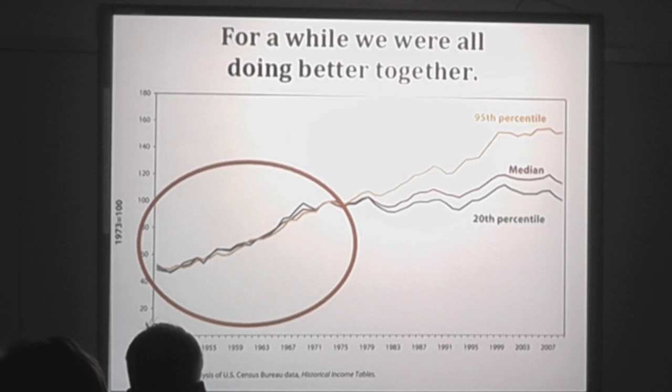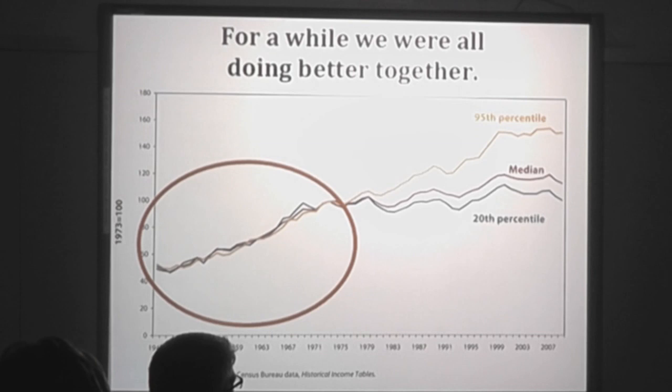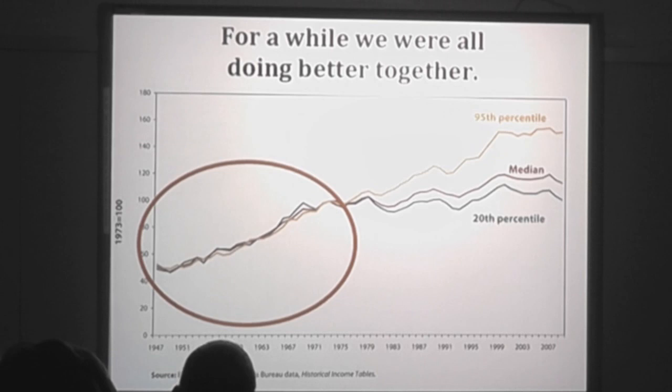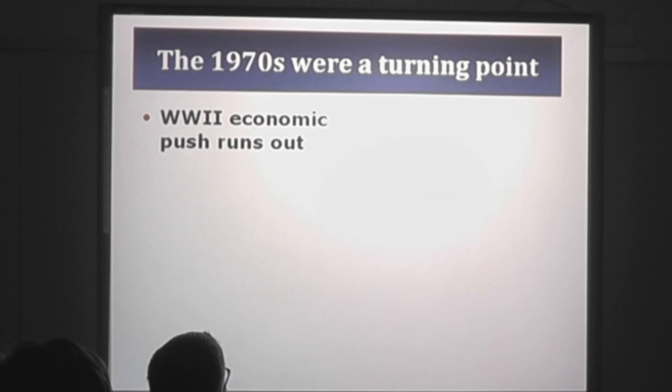Looking at the top 5% and the bottom 20%, from the end of World War II into the middle of the 70s, people didn't have the same amount of money — it's showing that their incomes were increasing at more or less the same rate. The poor were getting better off at the same rate that the rich were getting better off. It doesn't mean the poor weren't still poor at the end of that period; it just meant their income had increased at the same rate as the wealthy.